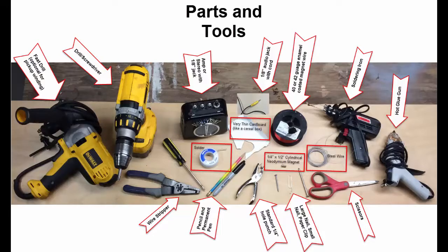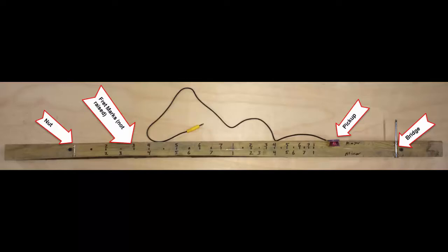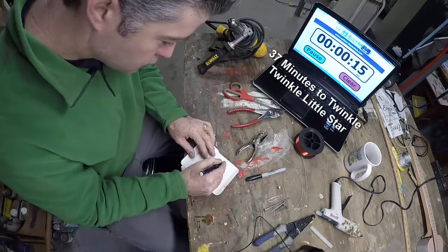Of the parts you see here, the hardest thing to find is going to be the enameled wire. You can buy it on Amazon though. This is the finished product, what it's going to look like.